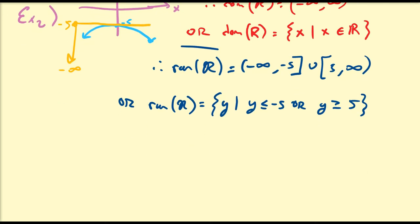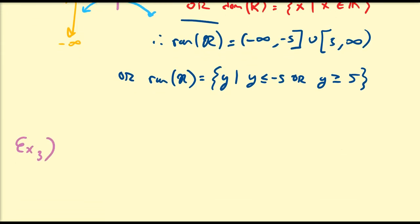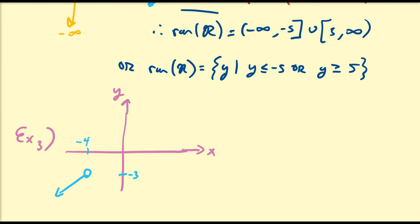Now let's do an example where the function is not the nicest looking function. Let's assume our new relation has x and y axes. The relation looks like this: there's a line segment with a hole at x equals negative four, y equals negative three. Then there's a gap, followed by another line segment. Let's assume that goes up to two, and then the curve jumps up to a height value of eight. So what is the domain and range of this function?